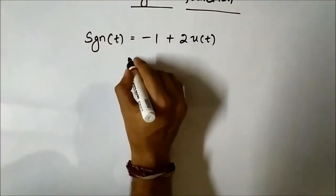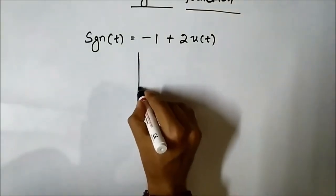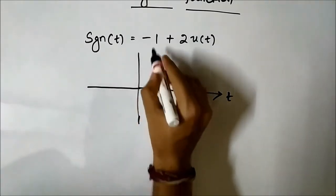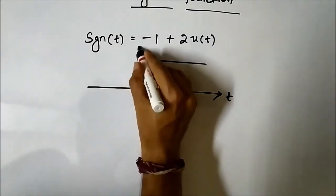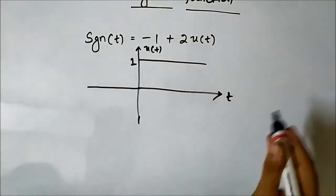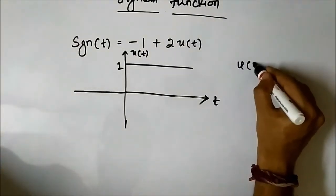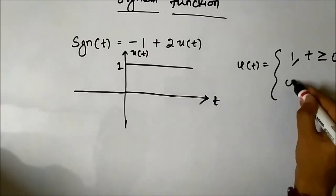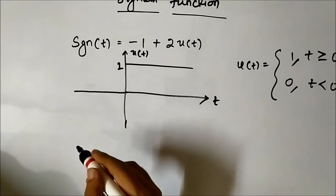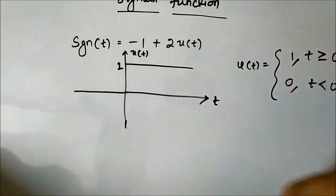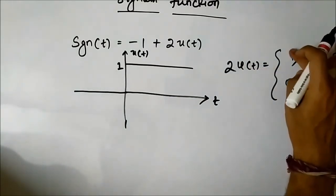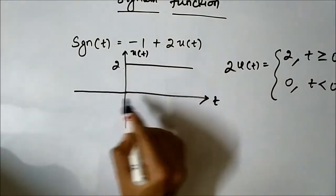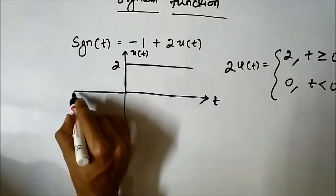We know that the unit step function u(t) is represented as 1 for t greater than or equal to 0, and 0 for t less than 0. So if we plot the signal 2u(t), its value will be 2 for t greater than or equal to 0, and 0 for negative time.